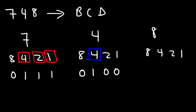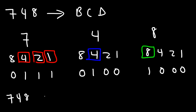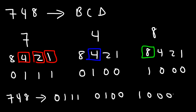And for the last one, all we need is an 8, so that's going to be 1000. So 748 in BCD is going to be 0111 0100 1000.